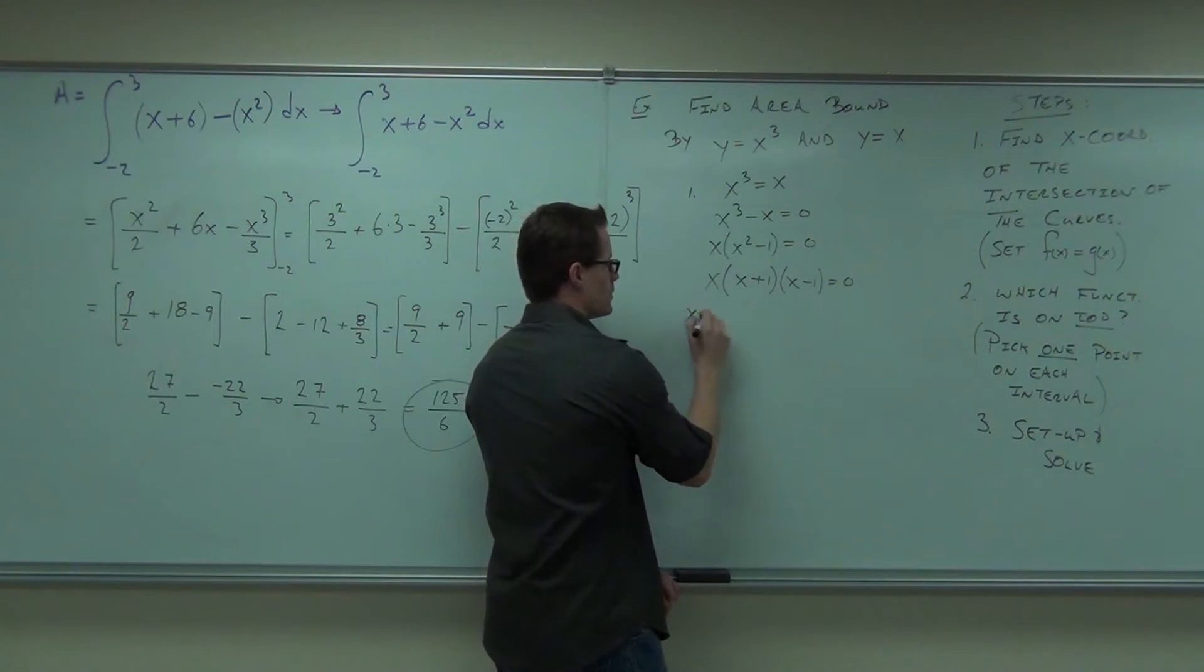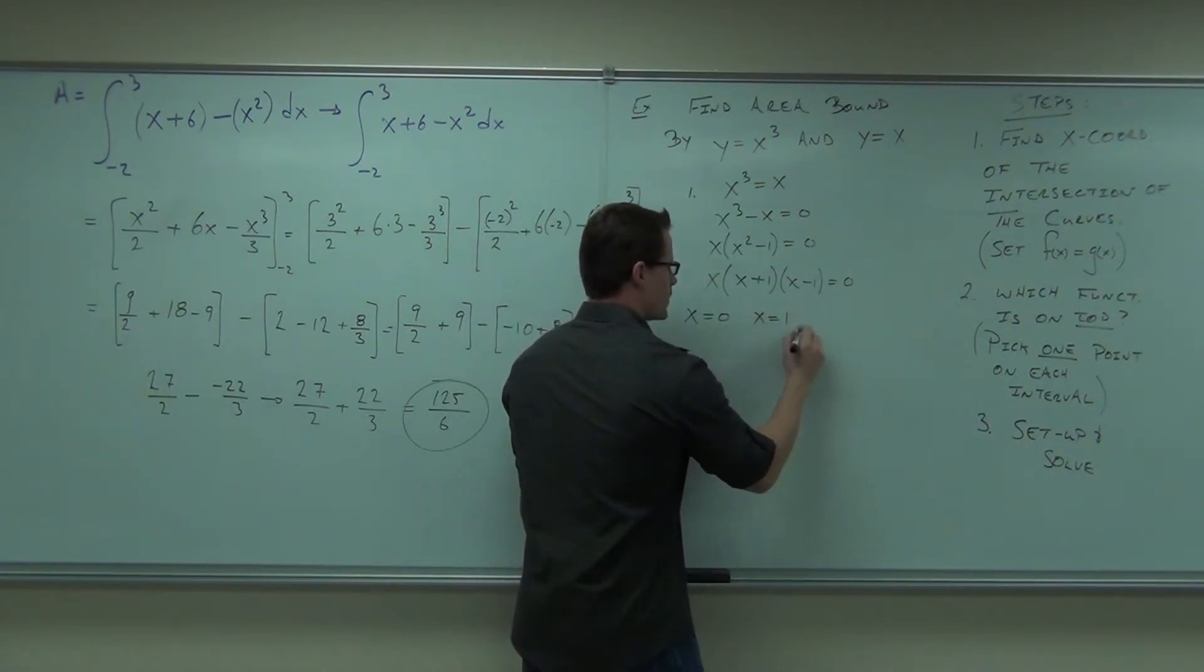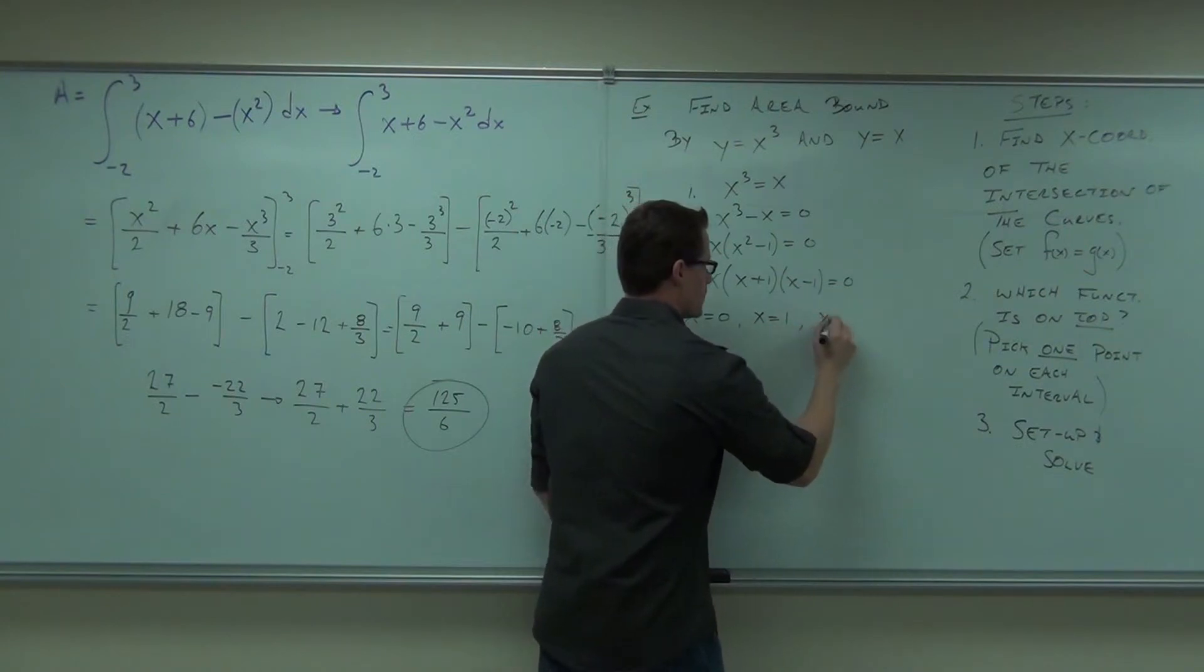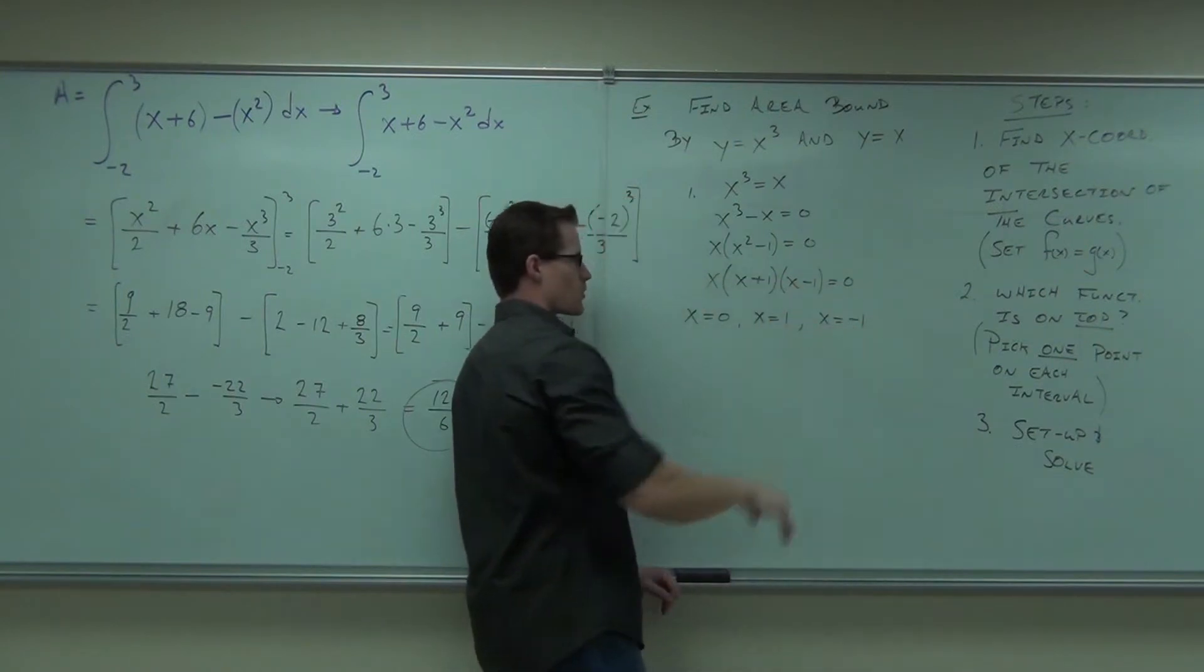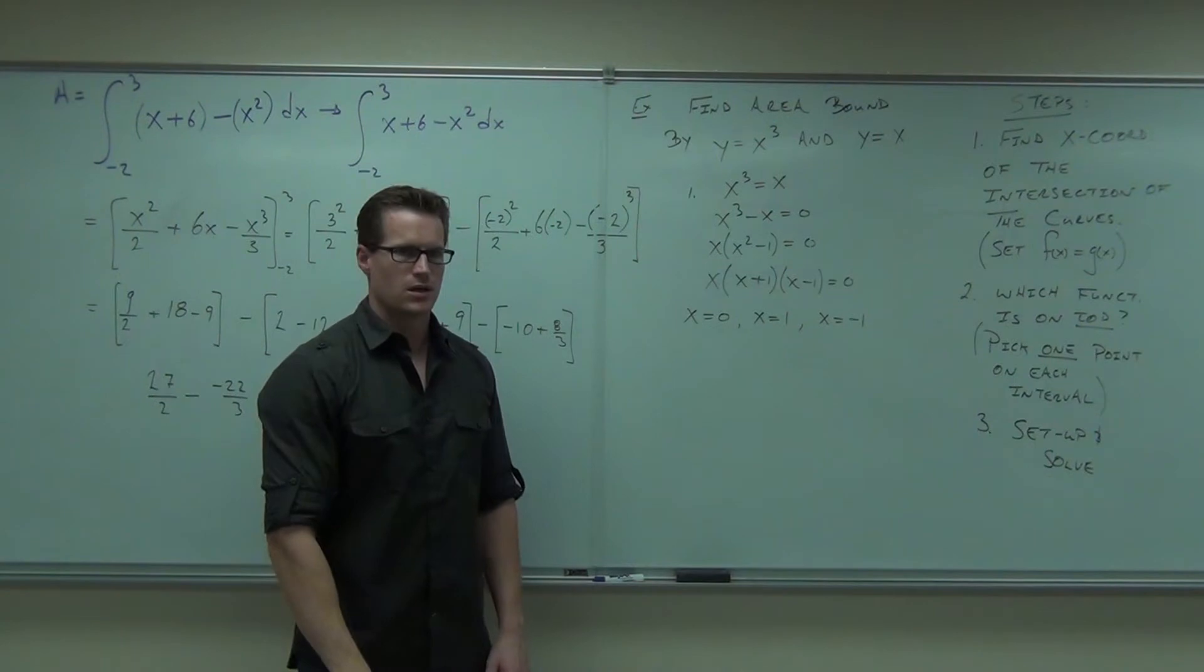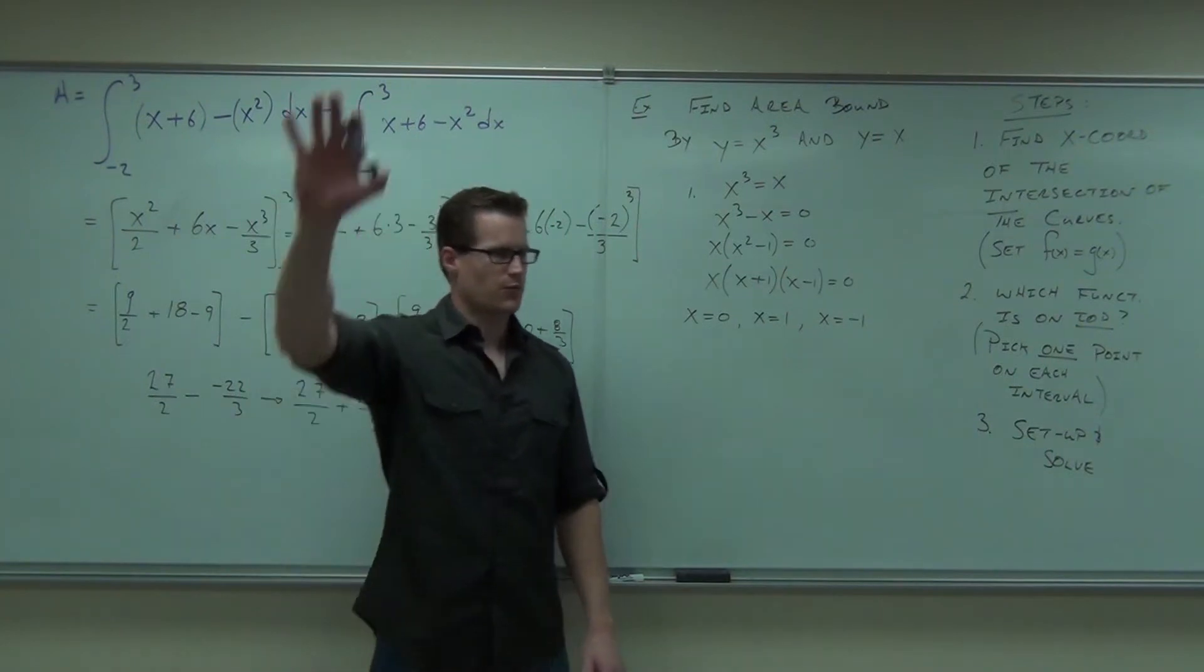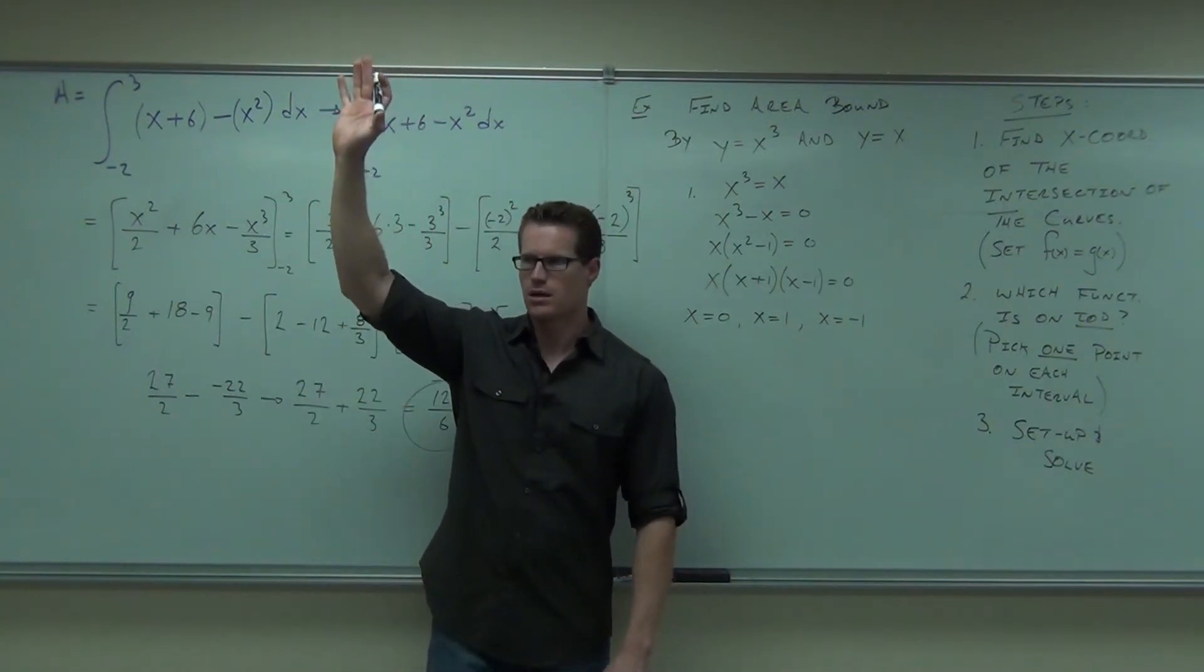Don't forget about that one. x equals zero, x equals one, x equals negative one. I think it happens out of order, but those are the three points that you get. Raise your hand if you're able to find those three points. Feel okay with that?